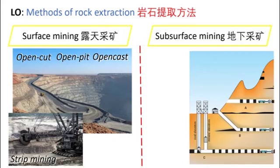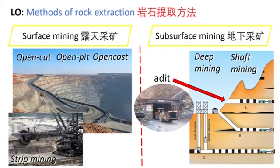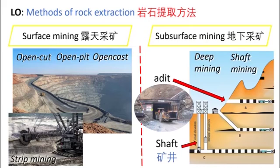Subsurface mining is when you use shafts to access rock deep below the ground. There are different shaft options: you can use a vertical shaft to reach rock very deep underground, or a horizontal shaft — as seen in the diagram at point A — where the shaft goes horizontally through the side of a mountain.